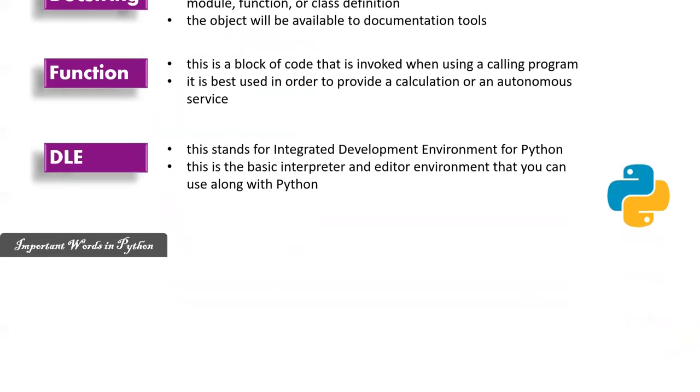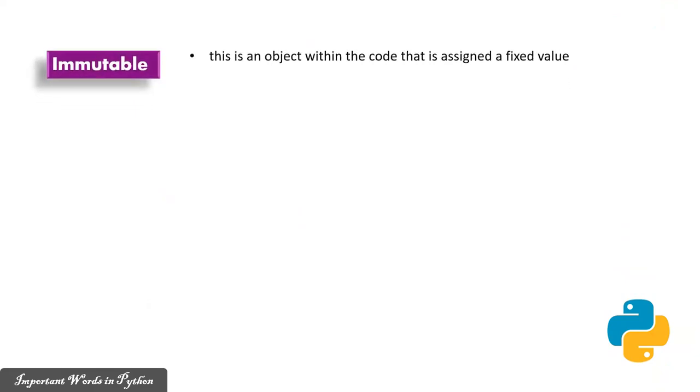More important words in Python programming. Immutable: This is an object within the code that is assigned a fixed value. This could include tuples, strings, and numbers.